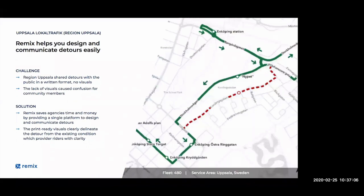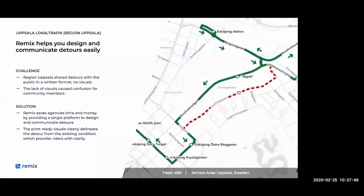Next, I showed you the map export with presentation-ready visuals. Here's an example from a real agency in Uppsala, Sweden, that has gotten great value from this polished map visual — they specifically use it for communicating detours easily and quickly. Previously, there was no great visual for this; detour information went out in written format, which sometimes caused confusion. Now they can provide detours visually with print-ready images to clearly delineate the detour from the existing service. This is a huge win for them.